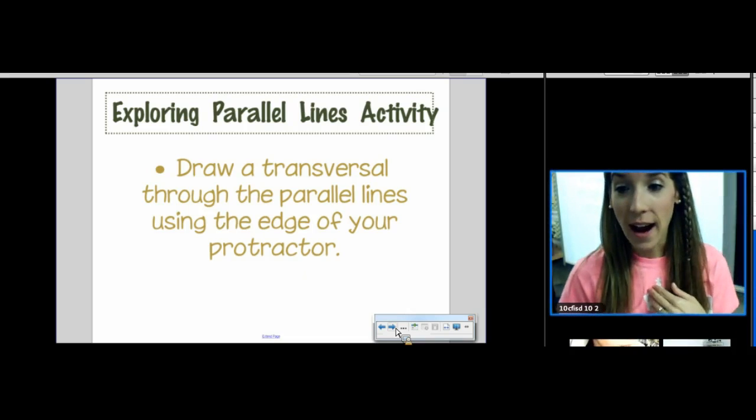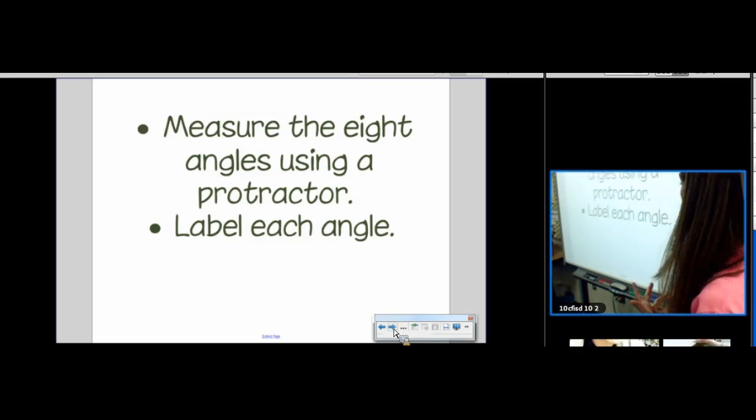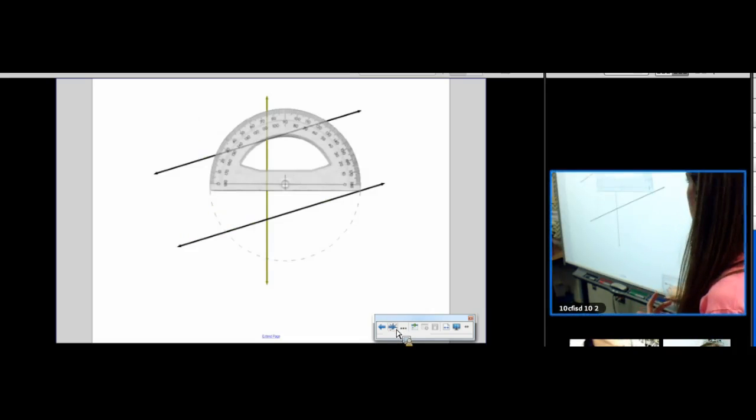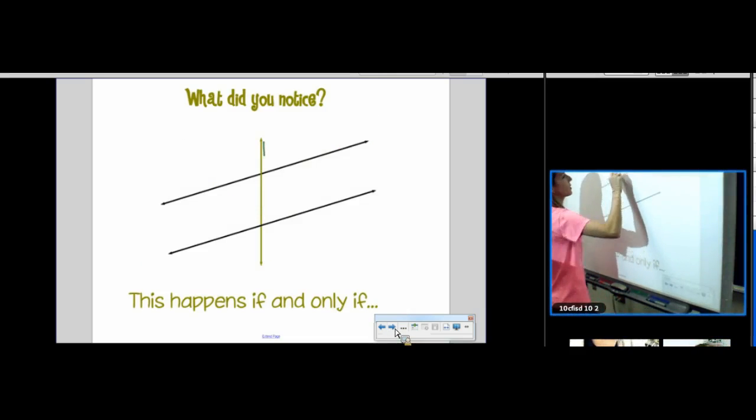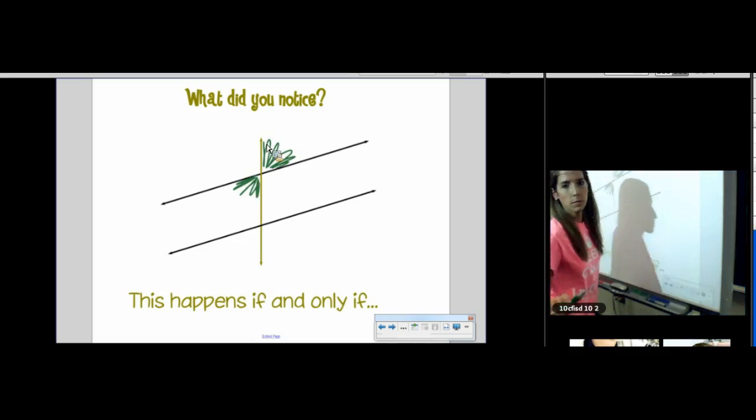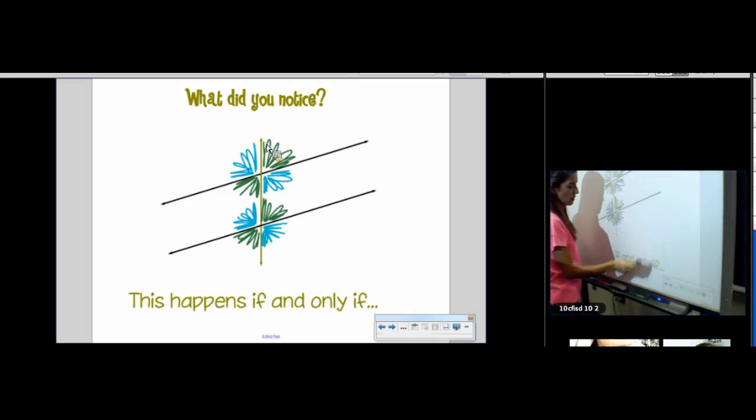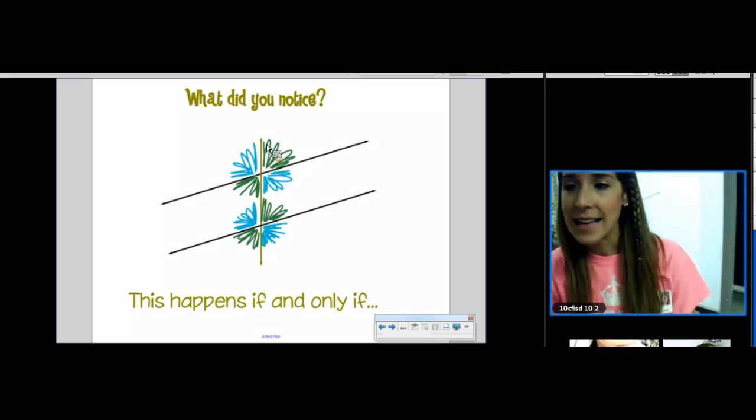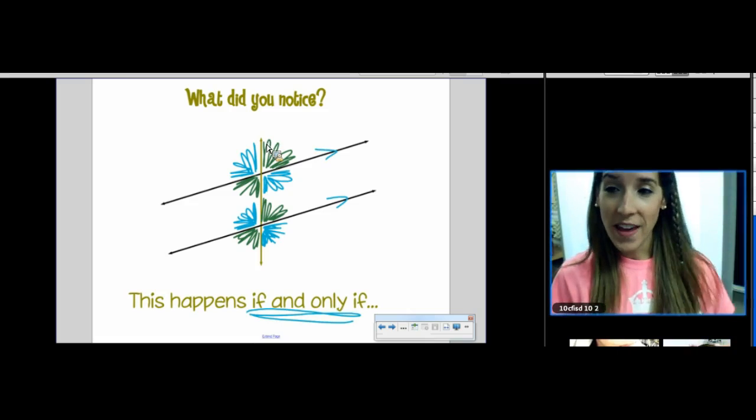Okay, so we did this yesterday, right? We got a head. So we already drew a transversal. We already measured or used patty paper or compared the angles. And then we came up with something cool that happened. When we shaded our angles, we realized that there was a relationship.